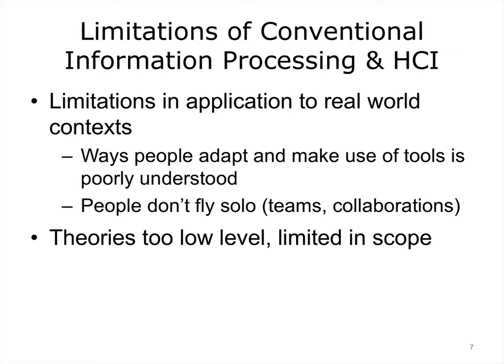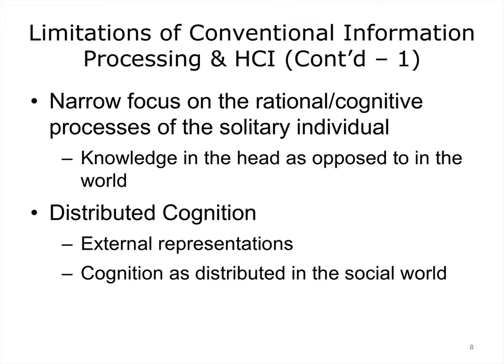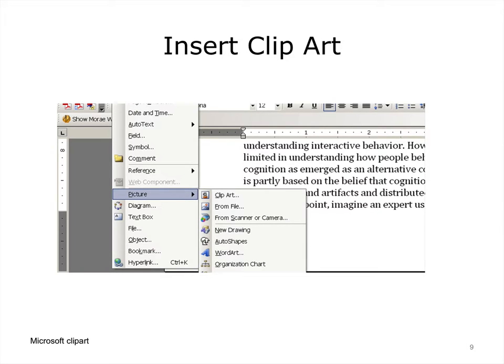The classical theories of information processing have been incredibly useful in understanding interactive behavior. However, we now recognize that they are limited in understanding how people behave in the real world. The conventional cognitive model situates knowledge and cognition inside the head. Distributed cognition has emerged as an alternative conceptualization of interactive behavior. This framework is partially based on the belief that cognition can be construed as distributed across technologies and artifacts, and distributed socially across different people. Knowledge also resides in the world and is available for us to use. To illustrate the point, imagine an expert user of a word processor who can effortlessly negotiate tasks through a combination of key commands and menu selections. The traditional cognitive analysis might suggest that the user has formed an image or schemata of the layout structure of each of the eight menus and retrieves this information from memory each time an action is to be performed.